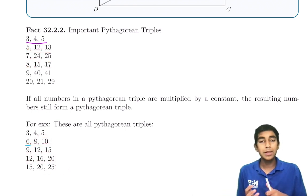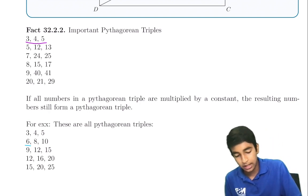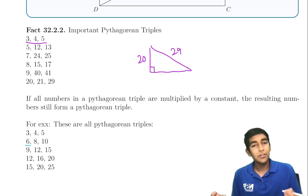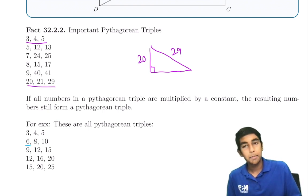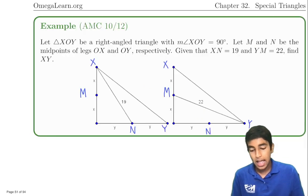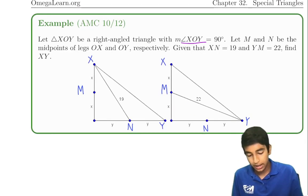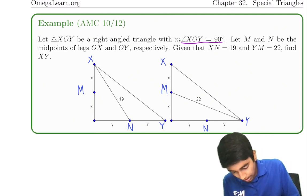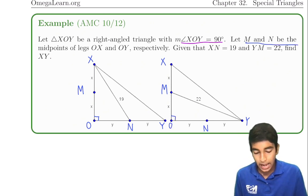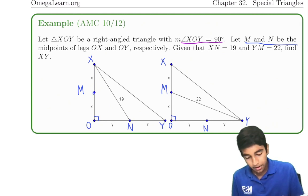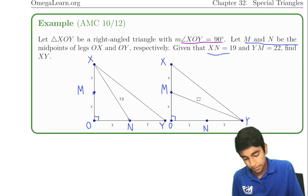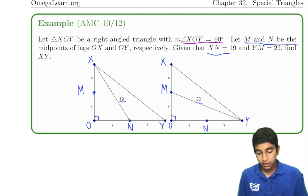Let's take an example from the AMC 10/12. In right triangle XOY, with the right angle at O, let M and N be the midpoints of OX and OY respectively. We're given that XN = 19 and MY = 22. We're asked to find XY. The key is realizing we have a bunch of right triangles. Using the Pythagorean theorem on each: (2X)² + Y² = 19² = 361, and X² + (2Y)² = 22² = 484.